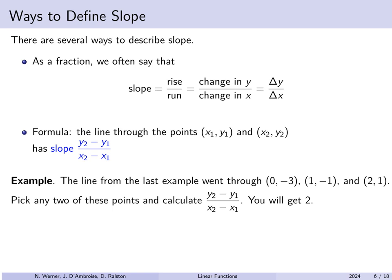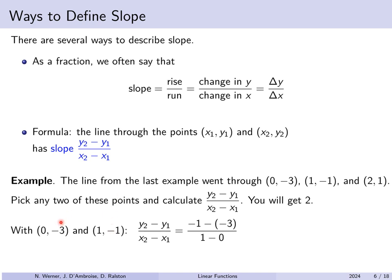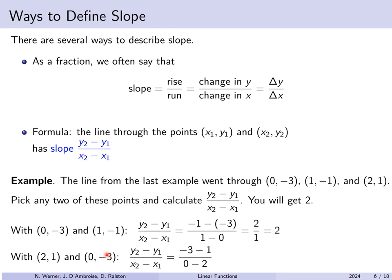For example, from the previous graph we had several points on the line. If we pick the points (0, −3) and (1, −1), we take the difference of y-coordinates over the difference of x-coordinates: negative one minus negative three over one minus zero, which is 2 over 1, which is 2. If we pick points (2, 1) and (0, −3), we get negative three minus one over zero minus two, which is negative four over negative two — the negatives cancel and we again get a slope of 2.